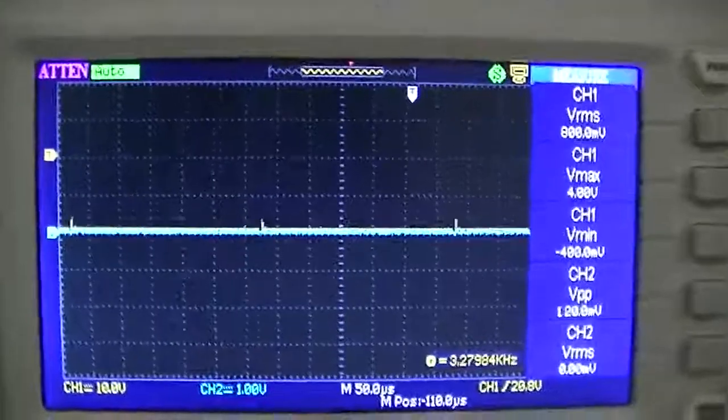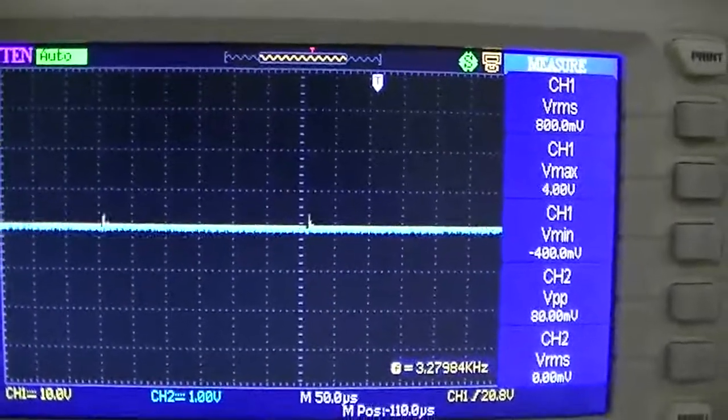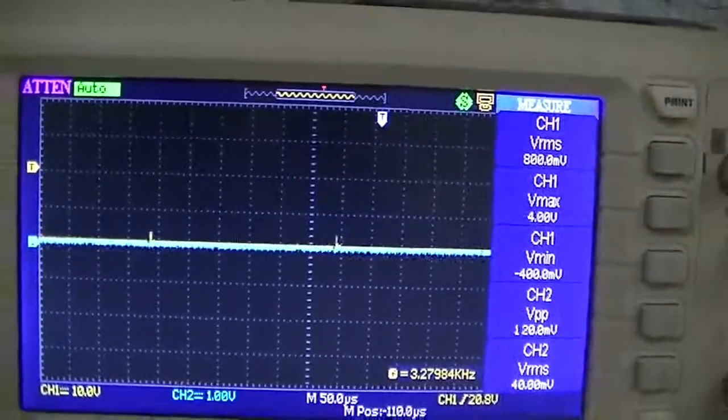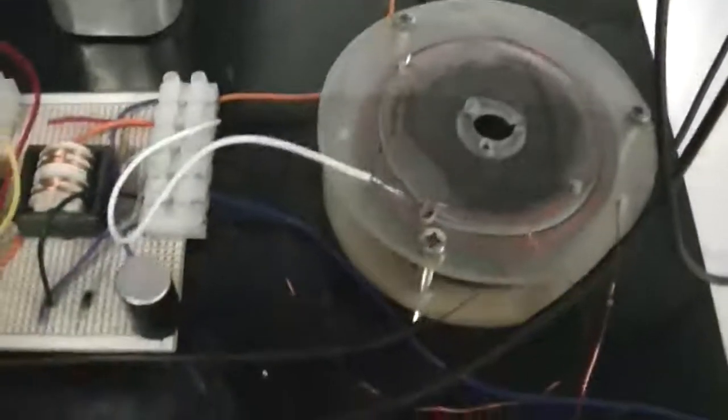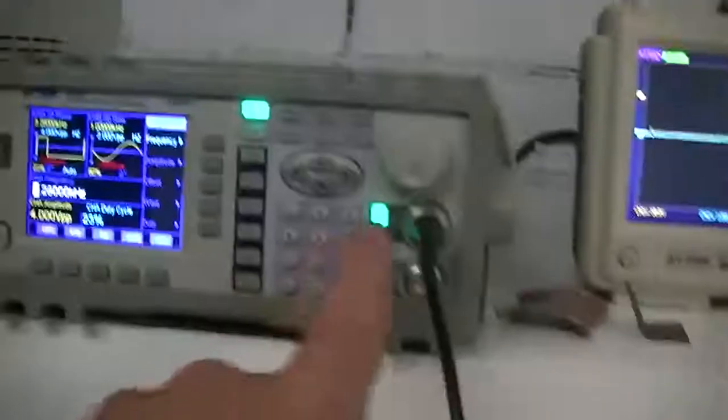The yellow trace is the one across the collector emitter and you can see we have nothing at all really from our signal generator in the way of power going into the system. So we'll turn the signal generator off.